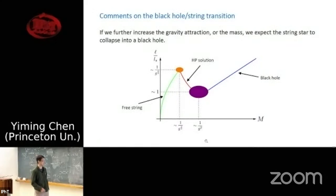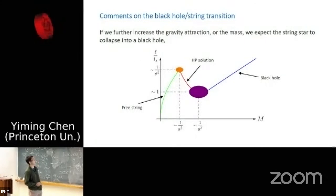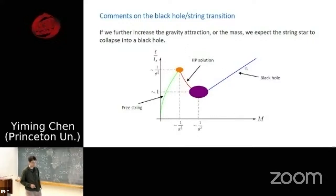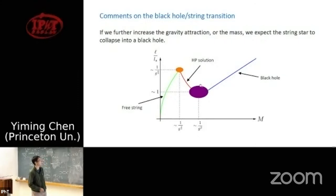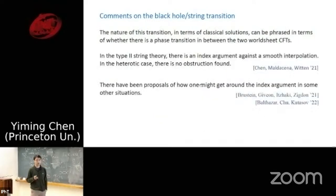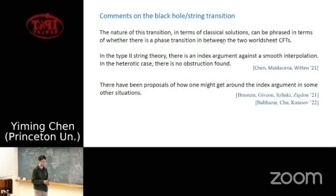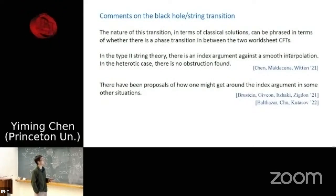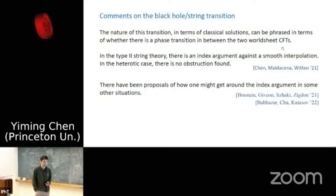If we further increase the gravity or the mass, we expect the string star to collapse into a black hole, as indicated by the purple region in the picture. The nature of this transition between the HP solution and the black hole — both being classical solutions in string theory — can be phrased as a question of whether there is a phase transition between the worldsheet CFTs underlying the two solutions. In type II string theory there is an index argument suggesting an obstruction against smooth interpolation; in the heterotic string case no obstructions were found. Remy will also talk more about proposals to get around the index argument.